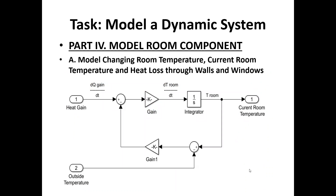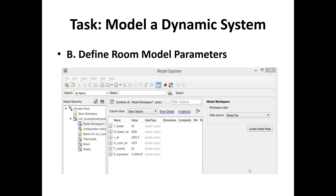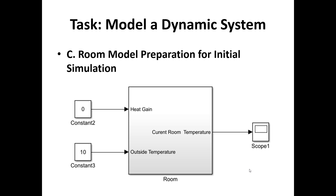Next is modeling the room component — specifically the changing room temperature, the current room temperature, and the heat loss through walls and windows. The inputs are the heat gain, the outside temperature (compared with a gain), and a signal for the current room temperature. We also define the values of the room model parameters and specify values for the heat gain and outside temperature.